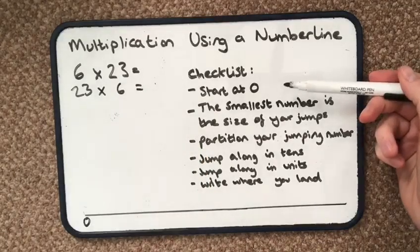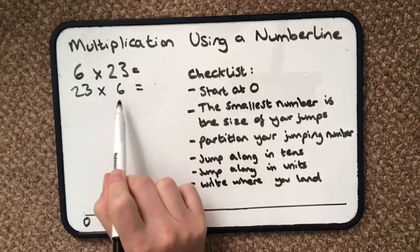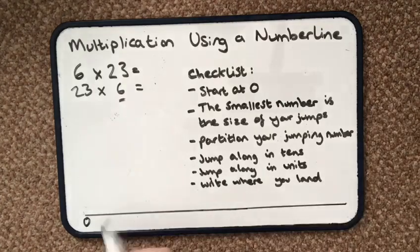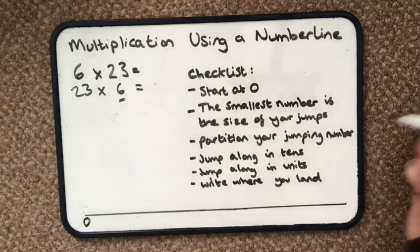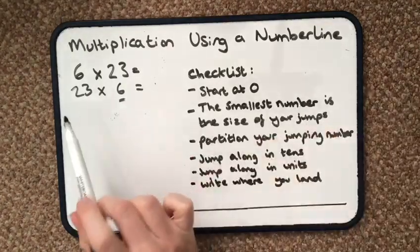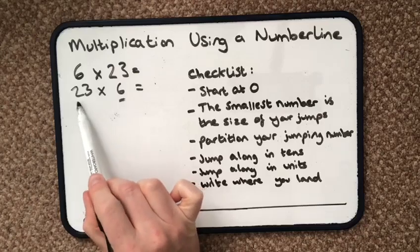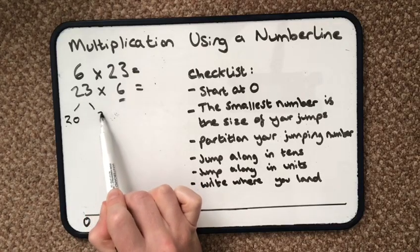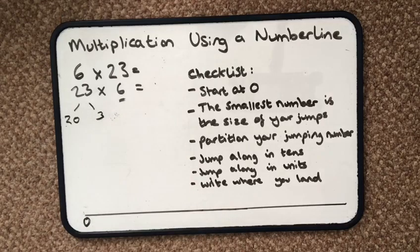So we start at zero and the smallest number is going to be my size of the jump, so I'm going to do jumps of six. But I have a jumping number, the biggest number, which it says I need to partition. Partitioning just means break your number into its tens and its units.